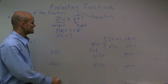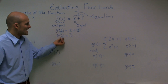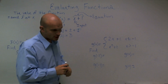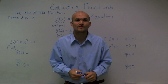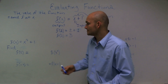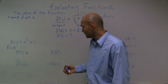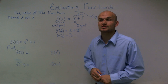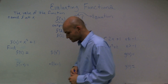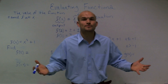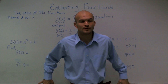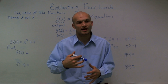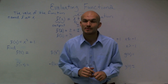So what this says is the value of my function at 2 is actually equal to 3. Sometimes when we're evaluating functions, we're going to get a value. And then other times, depending on what we evaluate our function for, we might get another expression. So what I'm going to do is go through two examples, show you how to evaluate them, give you a couple examples, and have you go ahead and evaluate them.